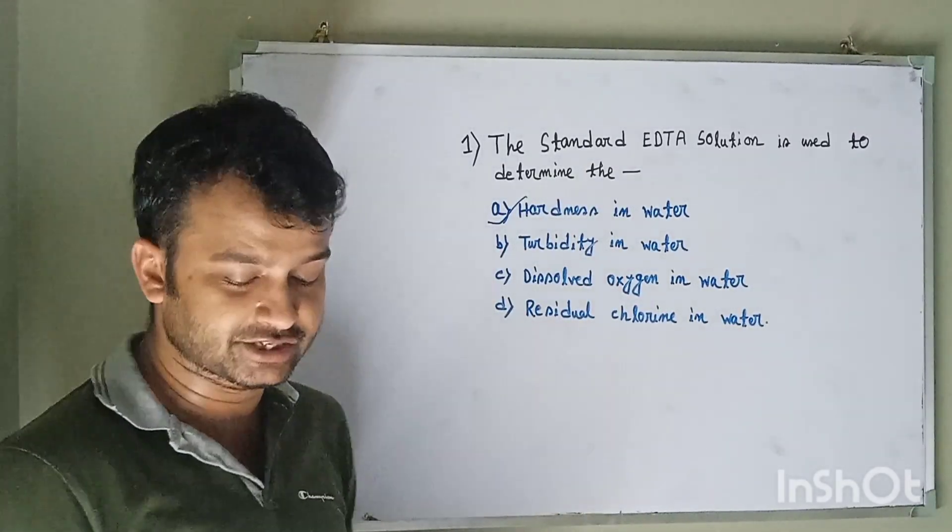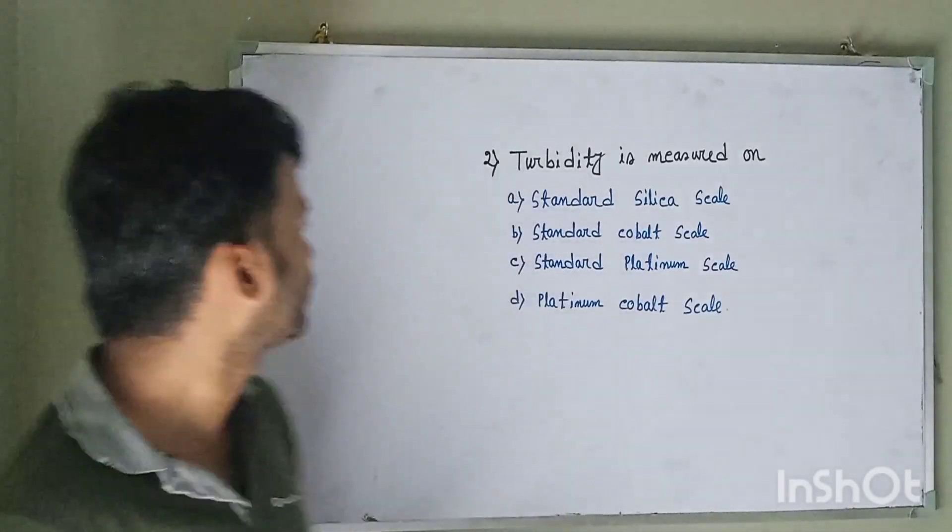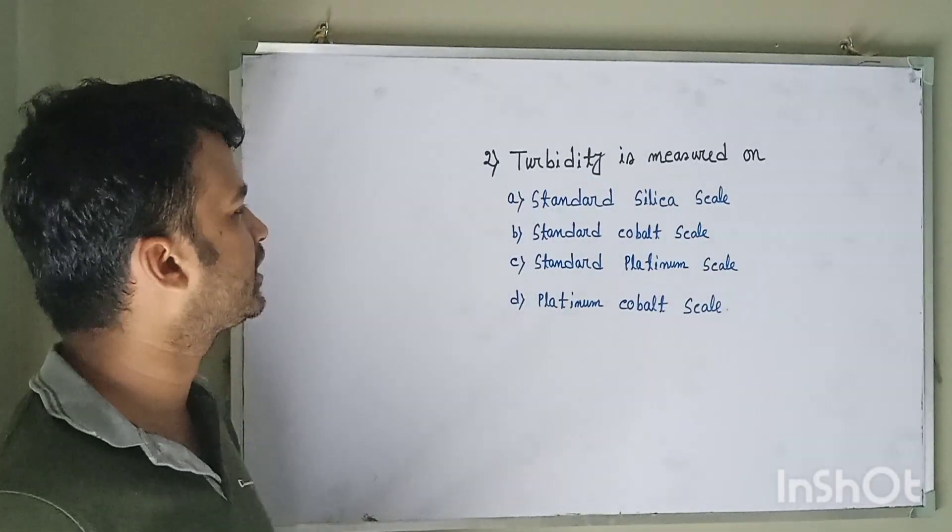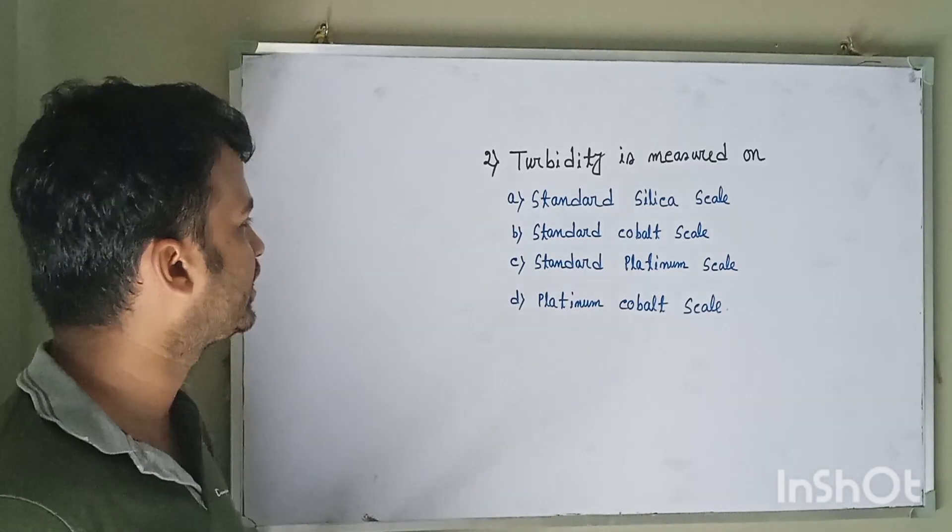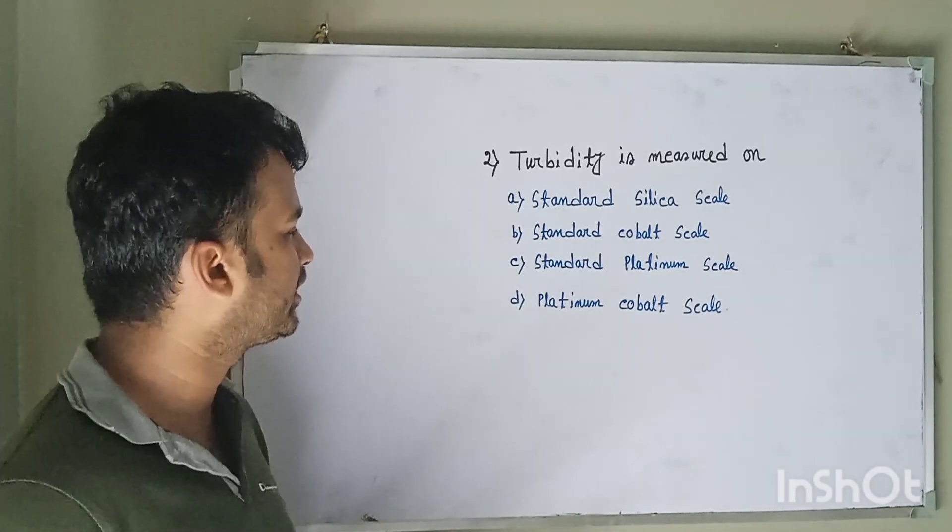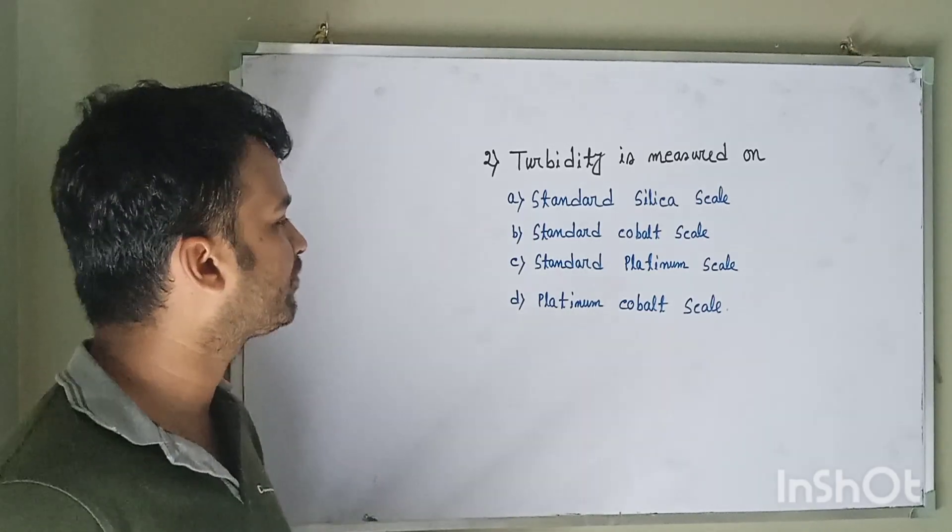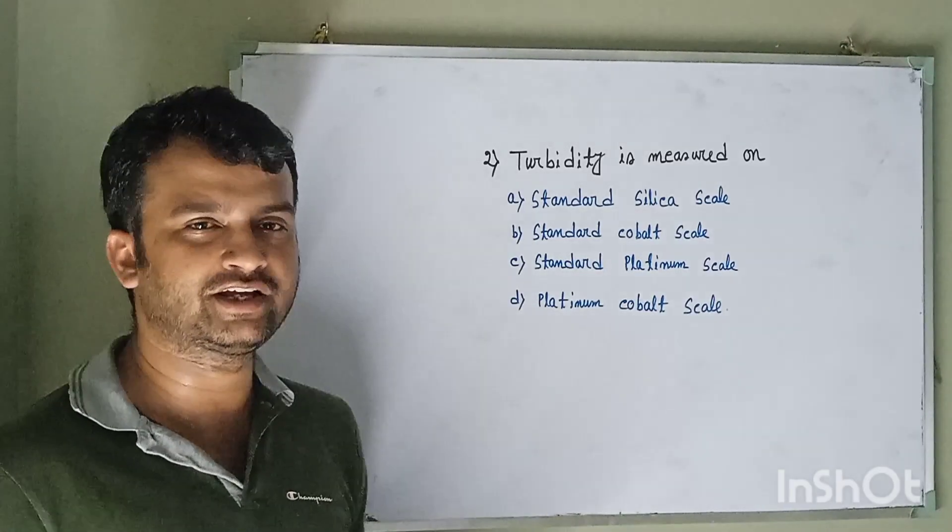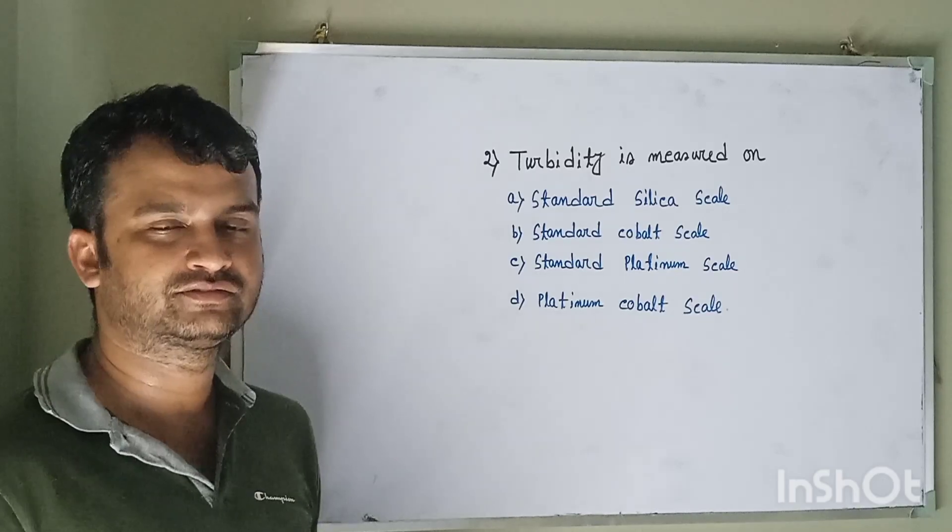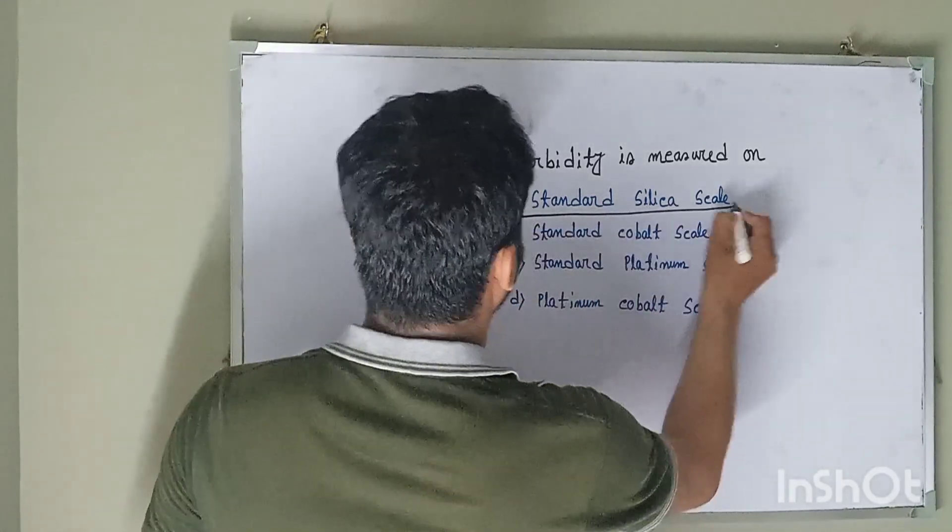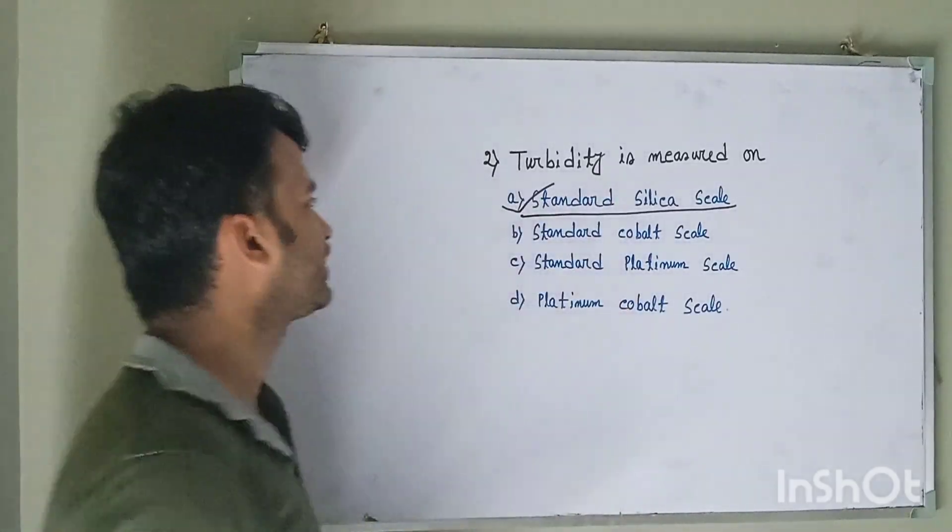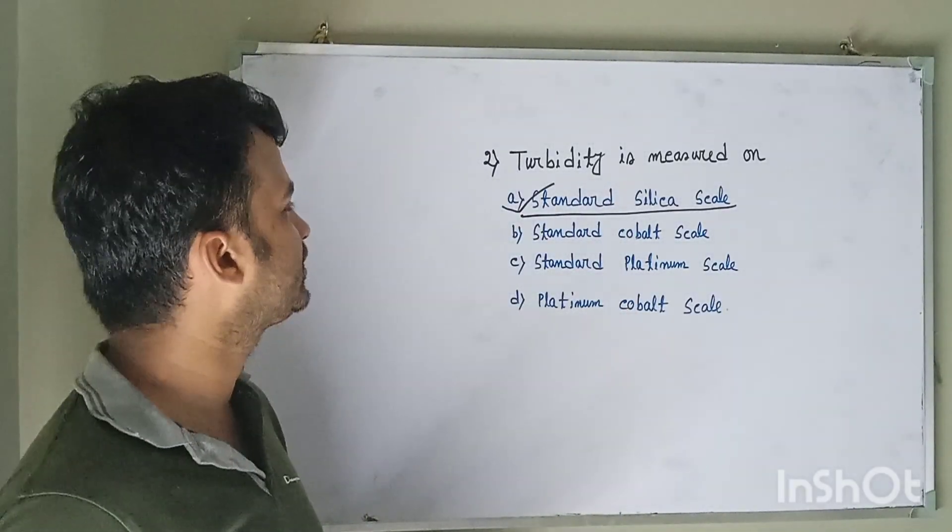Question number two: Turbidity is measured on option A standard silica scale, option B standard cobalt scale, option C standard platinum scale, option D platinum cobalt scale. The correct answer is standard silica scale. Always remember, turbidity is measured in standard silica scale.